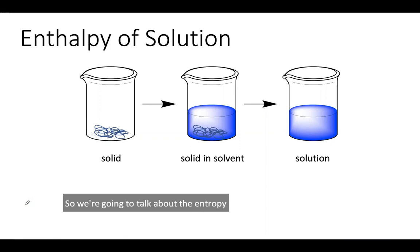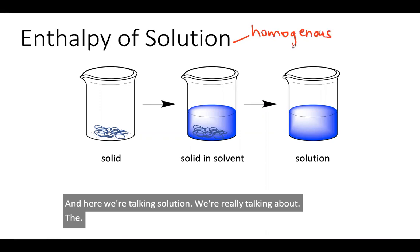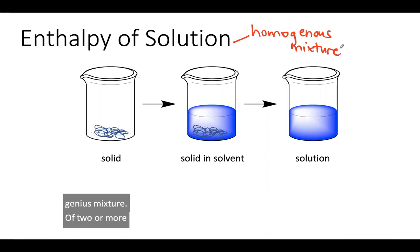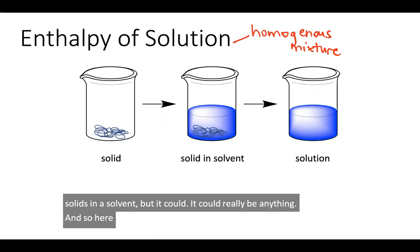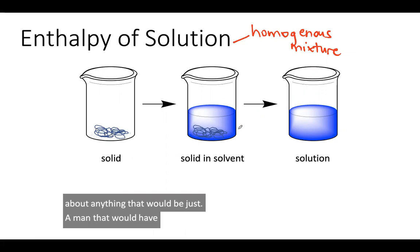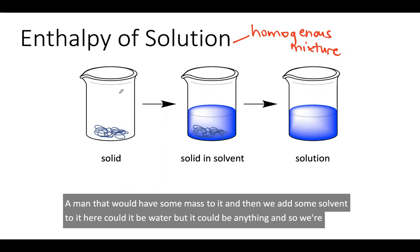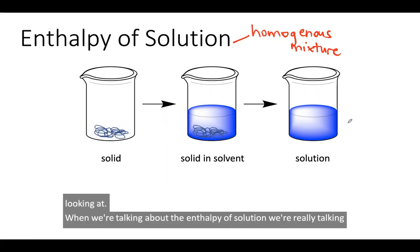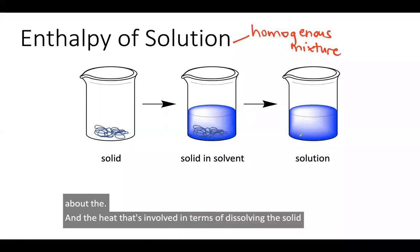We're going to talk about the enthalpy of solution. When we talk about a solution, we're really talking about the homogeneous mixture of two or more things. Here we're specifically going to talk about solids in a solvent, but it could really be anything. We have a solid sitting in a beaker, and then we add some solvent — here it could be water, but it could be anything. The enthalpy of solution refers to the heat involved in dissolving the solid into the solvent to form the solution.